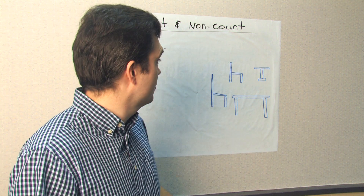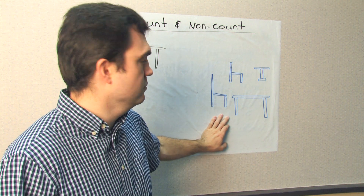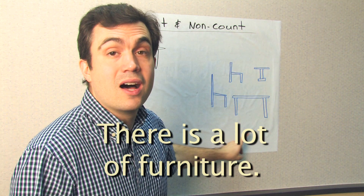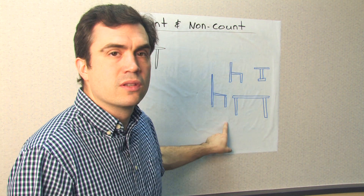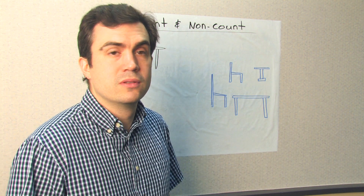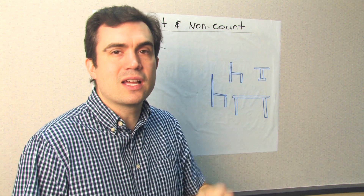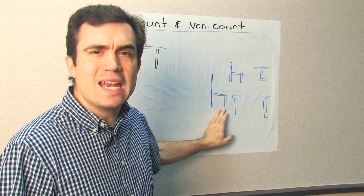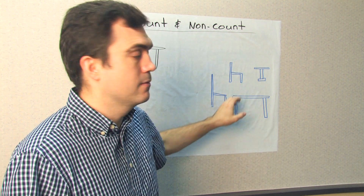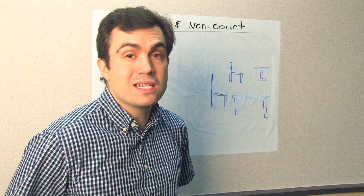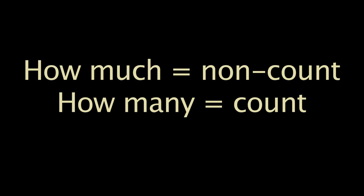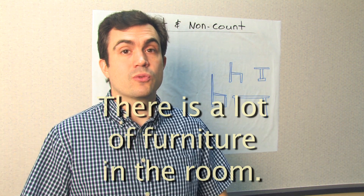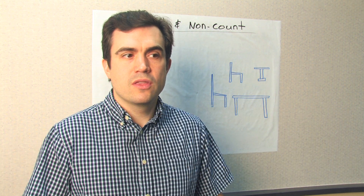Some can be used with count or non-count. What other non-count words could we use? There is a lot — two words — a lot. There is a lot of furniture. There is little furniture in the room. Here, I'm not using little to talk about size; I'm using little to talk about how much. How many tables are there? Countable — one. How many chairs? Countable — two. But how much furniture is there? Furniture is a non-count noun. We don't count the furniture. We approximate. We give an idea. There is a lot of furniture in the room. There is some furniture in the room. There is little furniture in the room.